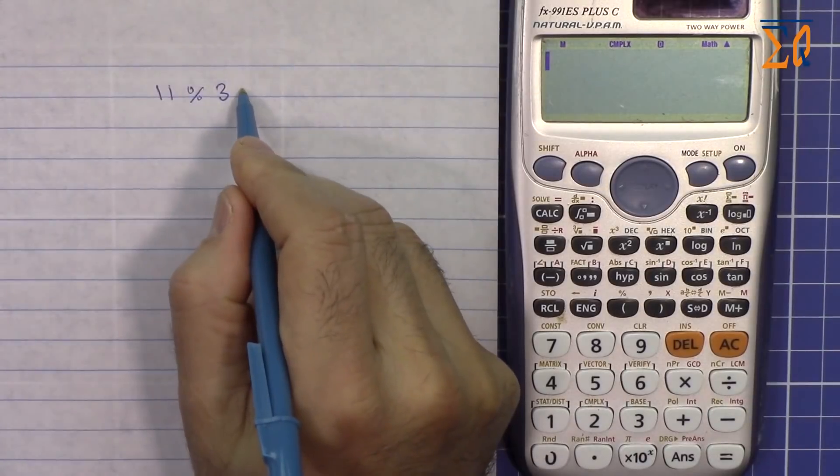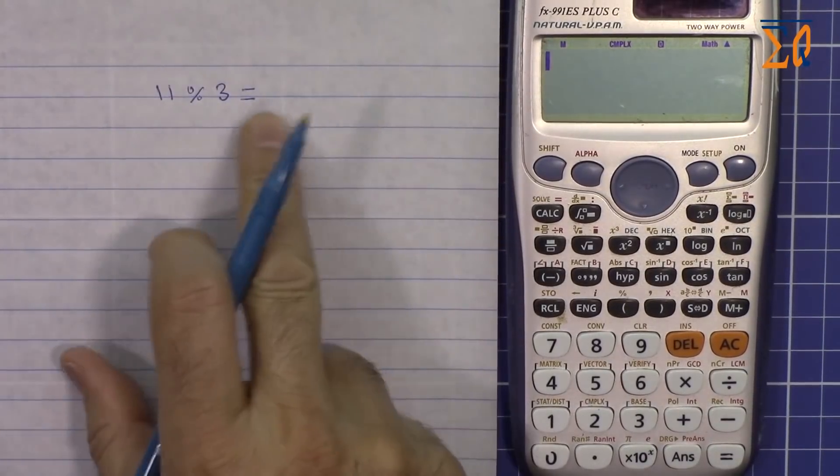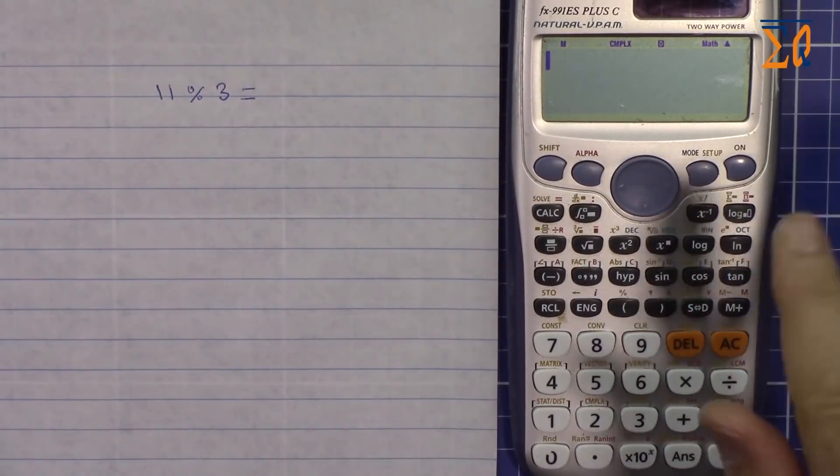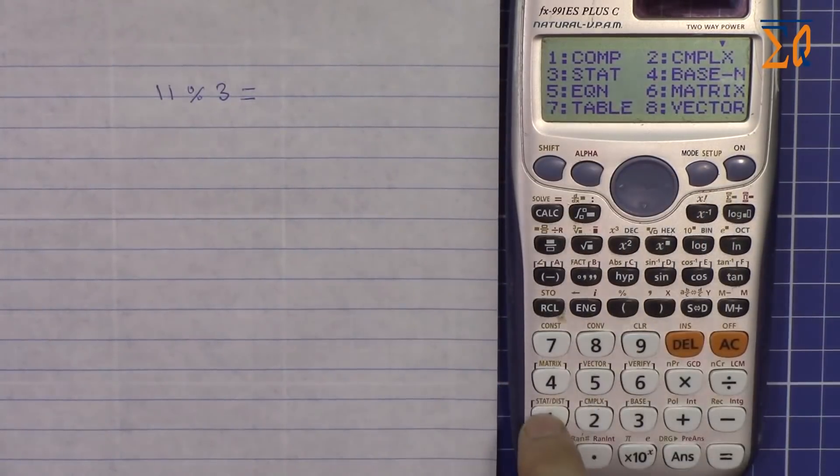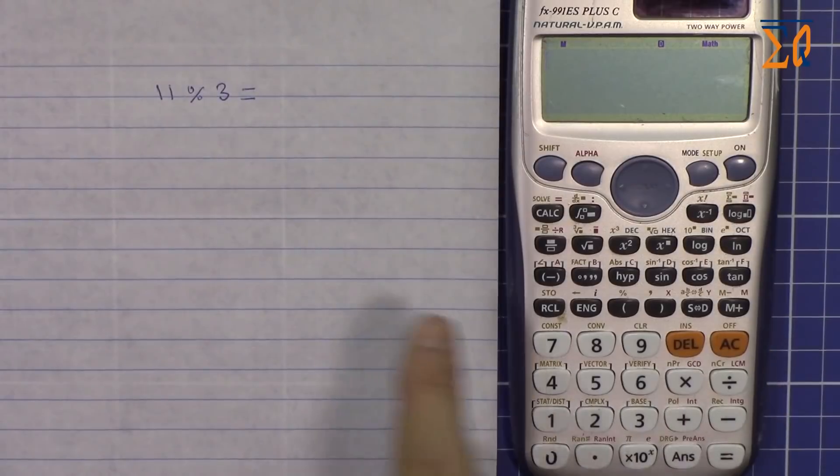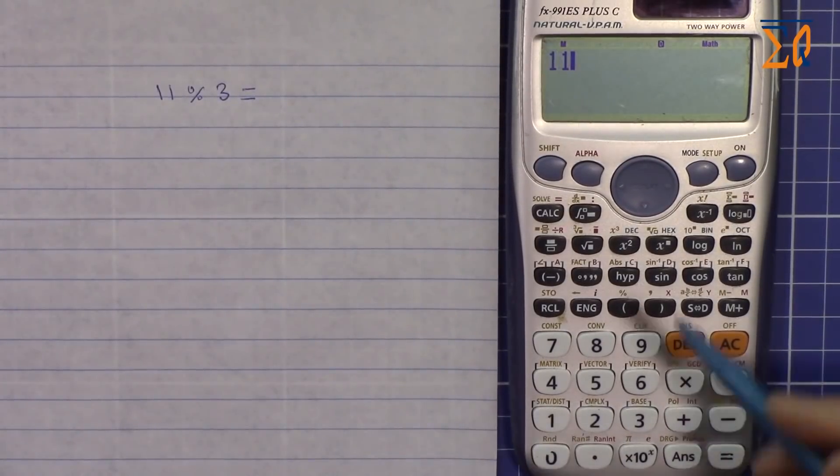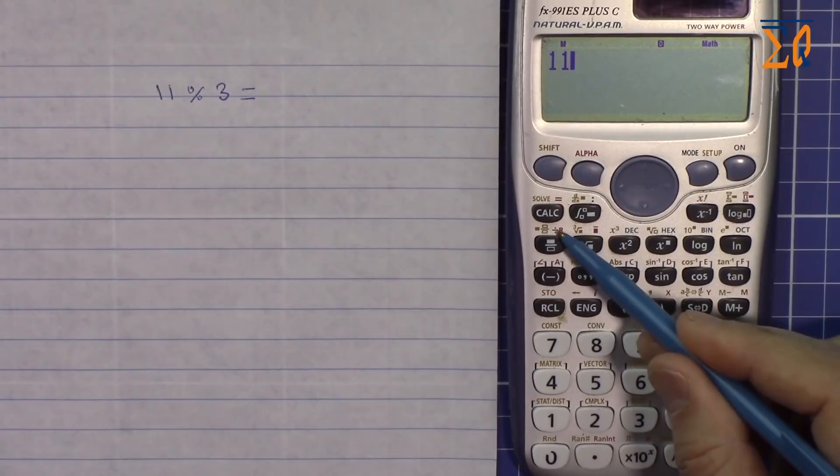How we do this in calculator, let me make sure that we go to the mode and then one, we are in regular mode. So 11 modulus, I press 11, for the modulus this is division R with the red.